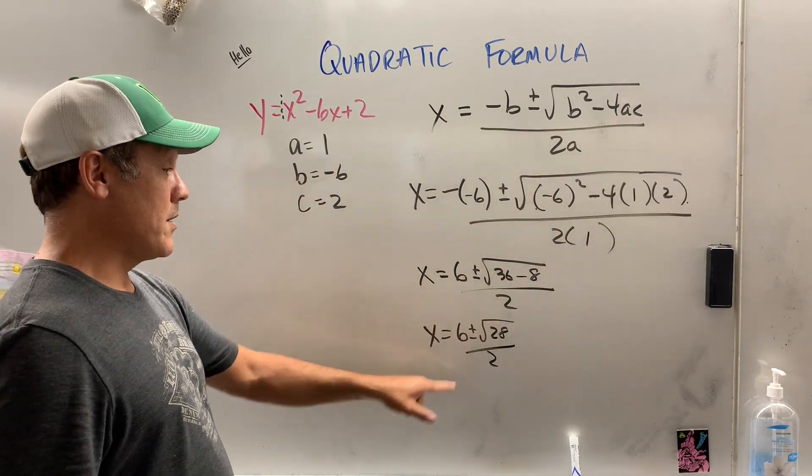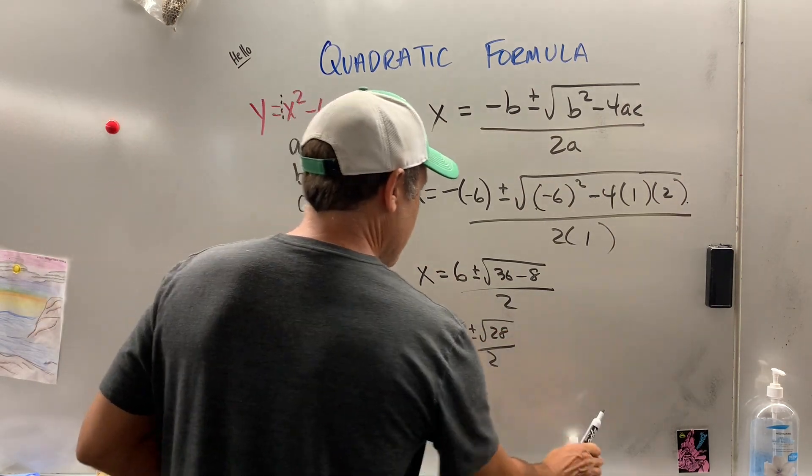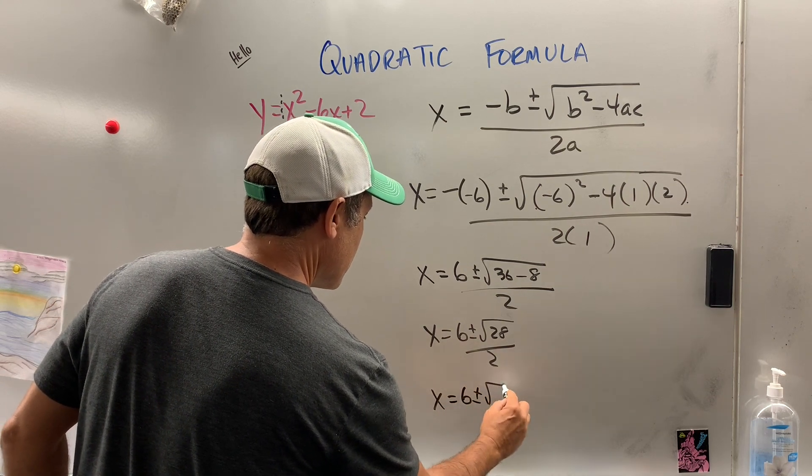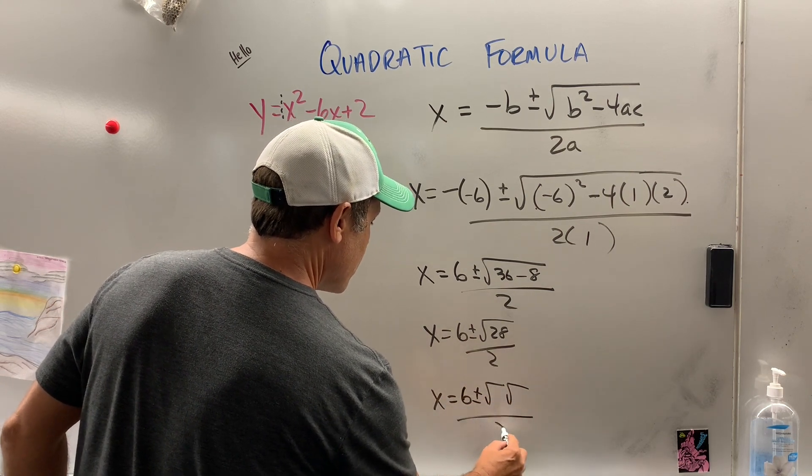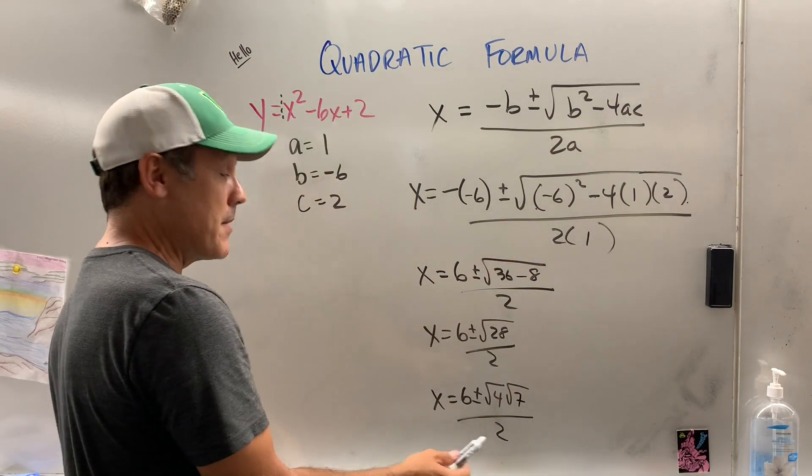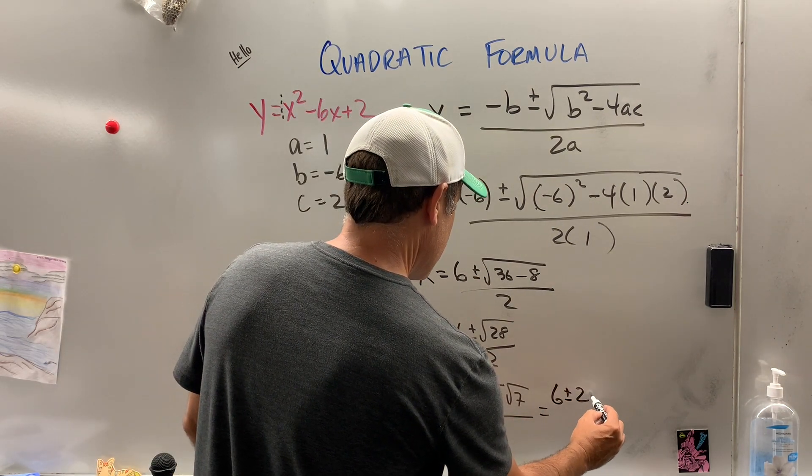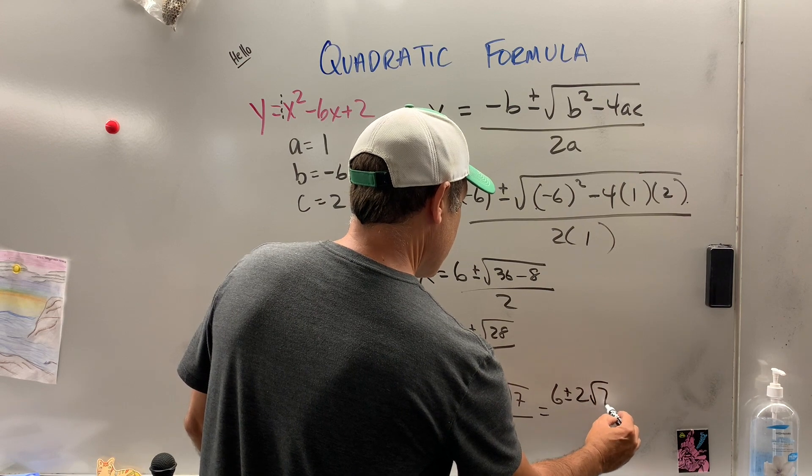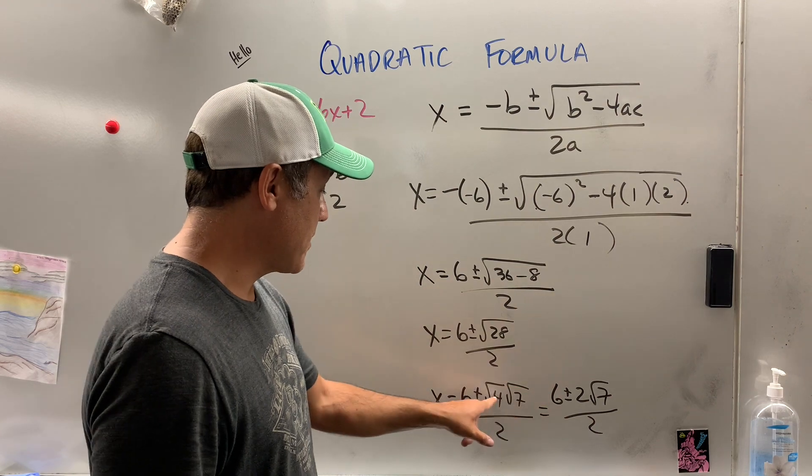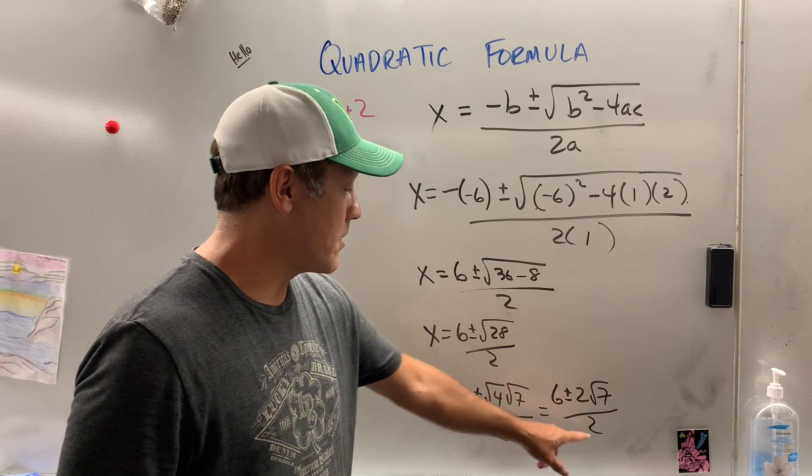We could break down the square root of 28. So I'm running out of room. I think I'm going to come down one more time. x equals 6 plus or minus the good, the bad, and it's over 2. What's the good? 4. The bad is 7. 4 is on my good list. That equals 6 plus or minus 2 radical 7 over 2. How did I get that? I brought the 6 and the plus minus. The square root of 4 is 2. Square root of 7 is square root of 7, and then it's over 2.